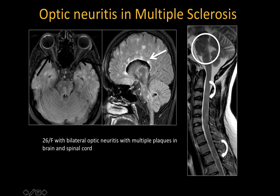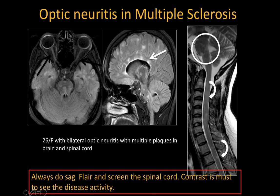This is another case — a 26-year-old female who had bilateral optic neuritis and multiple plaques in the brain and spinal cord. The plaques are perpendicular to the lateral ventricle and involve the corpus callosum — this is classically called Dawson's fingers. Plaques are also seen in the brain stem and spinal cord. Remember, spinal cord plaques in MS are short and usually involve the lateral or posterior funiculus. Sagittal FLAIR images and spinal cord screening are recommended, and contrast is mandatory to assess disease activity.